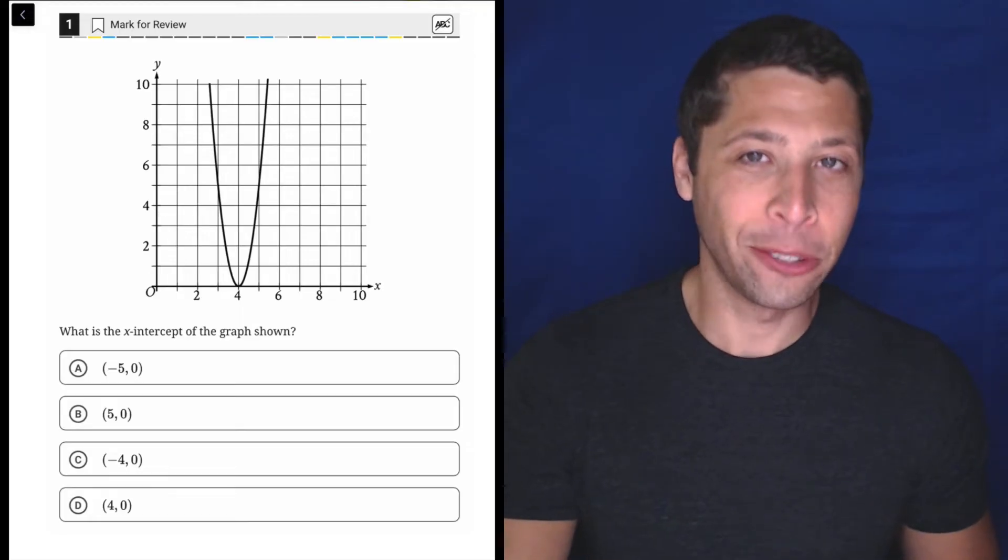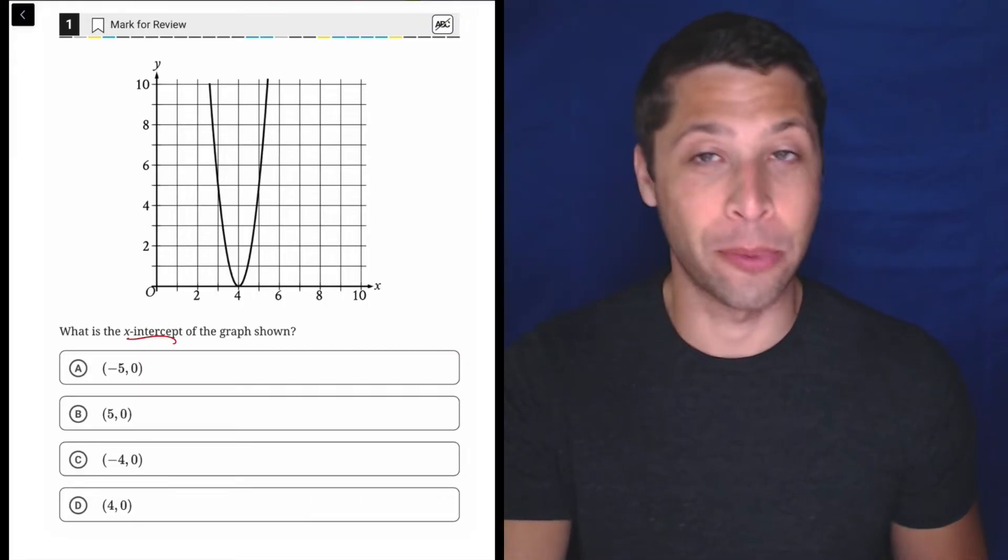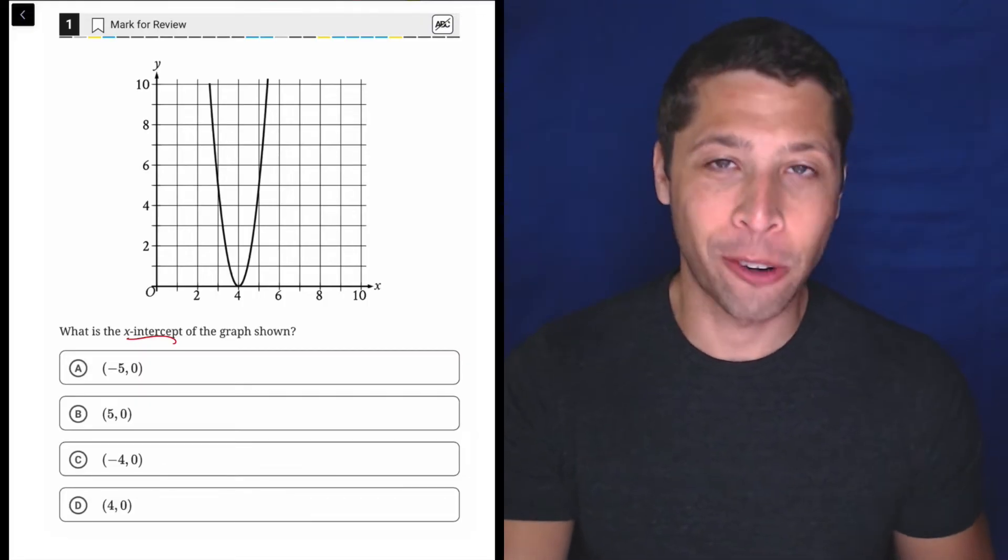where you just need to know how to read points on a graph. By your age, you should know how to do this. This is the point right here, the x-intercept is where the parabola crosses the x-axis.